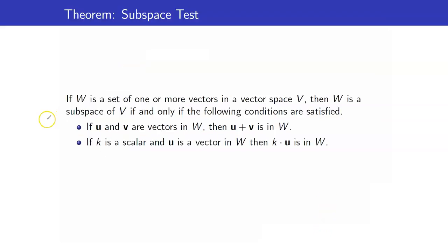That gives us the following theorem — the subspace test theorem. If W is a set of one or more vectors in a vector space V, then W is a subspace of V if and only if the following conditions are satisfied: first, it must be closed under vector addition, and second, it must also be closed under scalar multiplication. When W is closed under vector addition, the sum of any two vectors in W should also be in W. When we take a vector in W, its scalar multiple should also be in W.